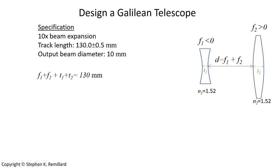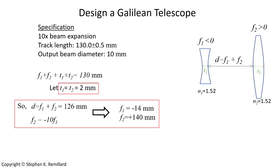And so the focal lengths F1 plus F2 plus the thicknesses of the lenses need to add up to that track length of 130 millimeters. Let's use a thickness of 2 millimeters on both lenses, so that the separation between the lenses will be 126 millimeters. And another working equation comes from magnification, which is F2 over F1, so the focal length F2 is minus 10 times F1.